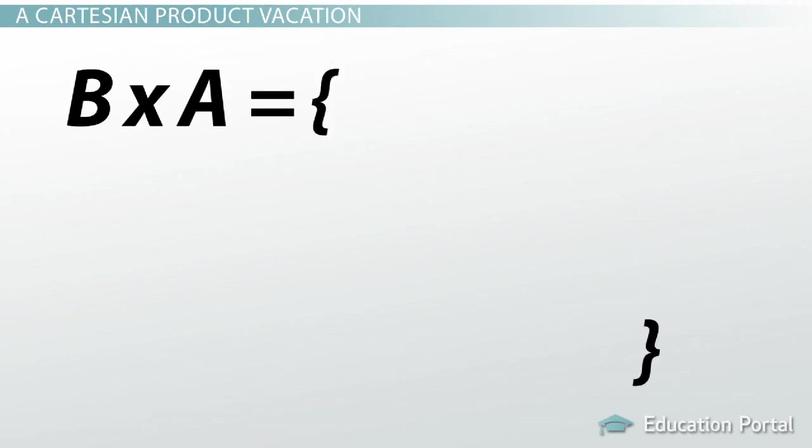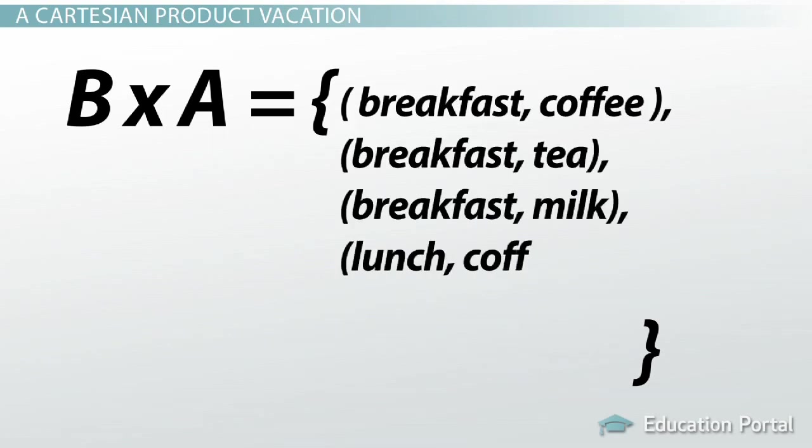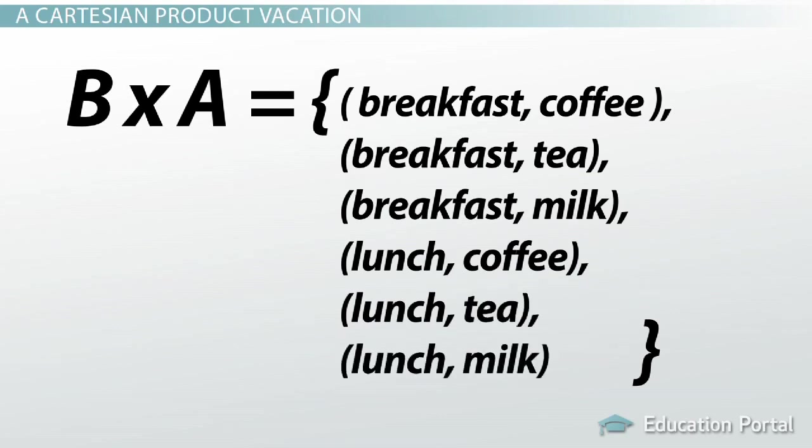If I have the Cartesian product B times A, we would have B times A equals breakfast coffee, breakfast tea, breakfast milk, lunch coffee, lunch tea, lunch milk.